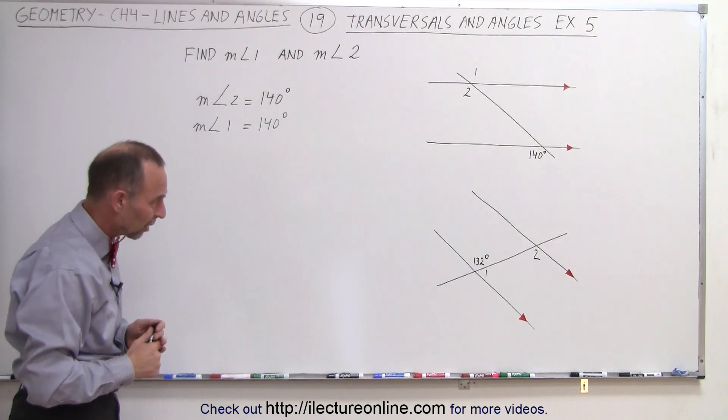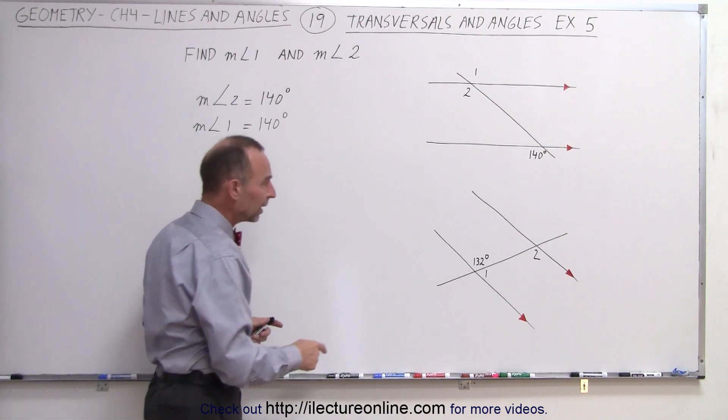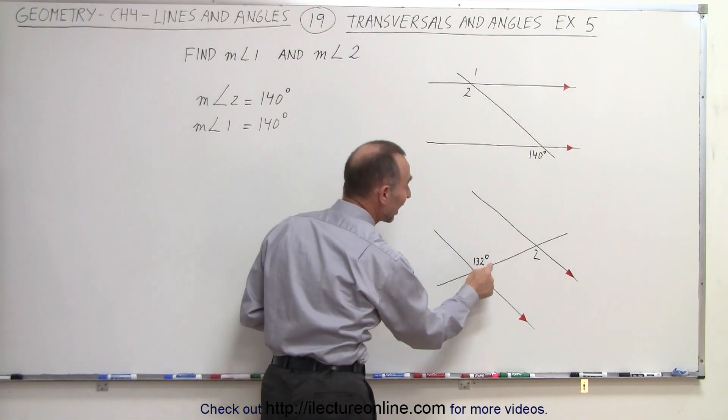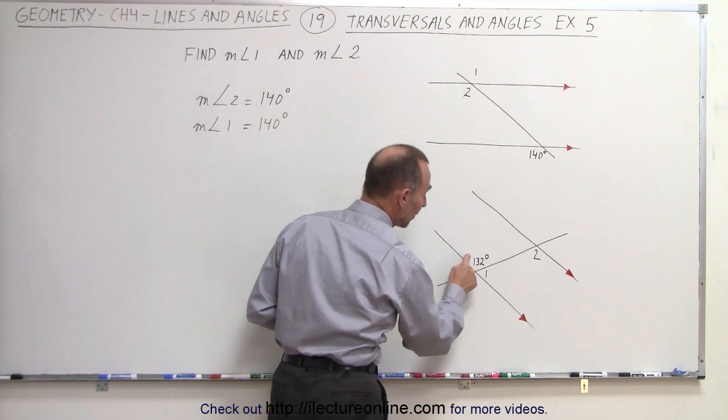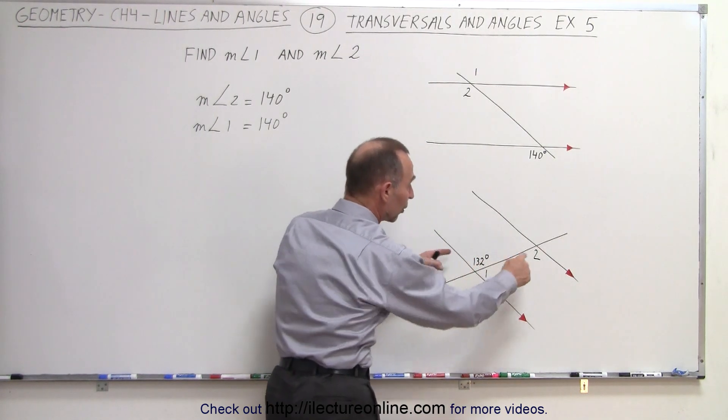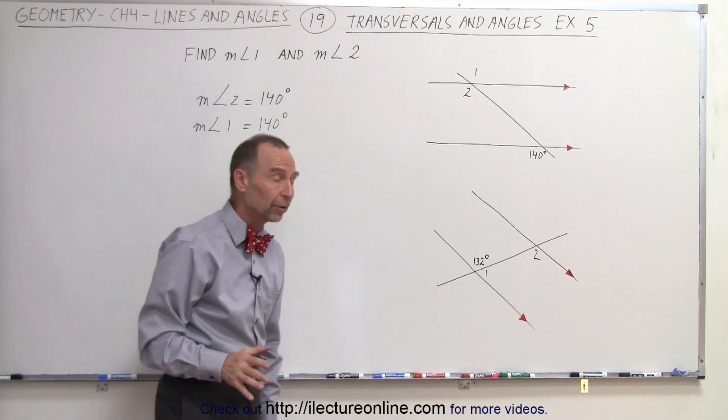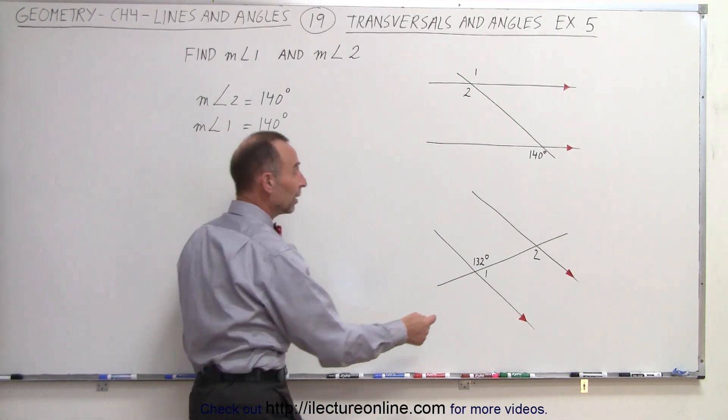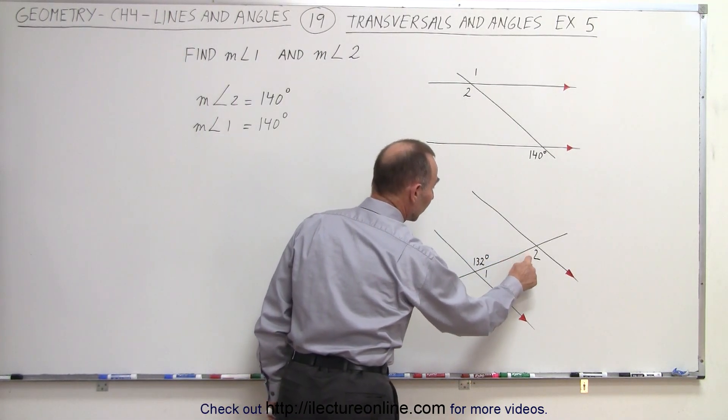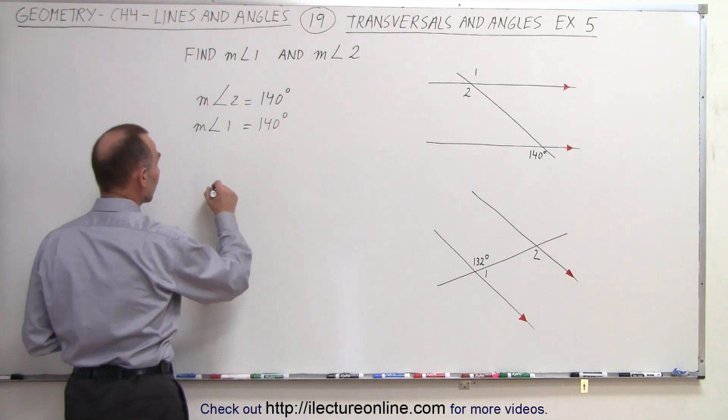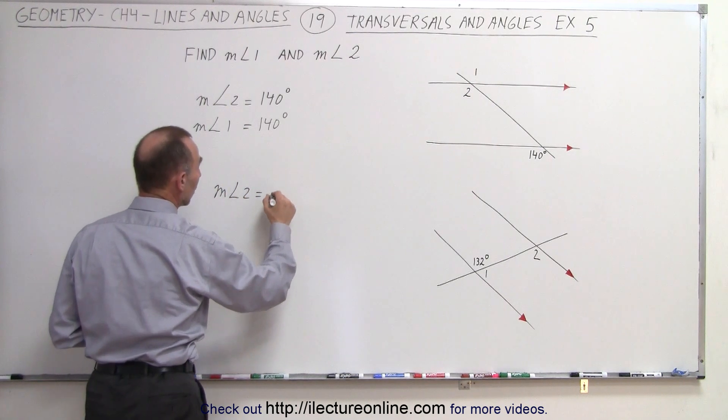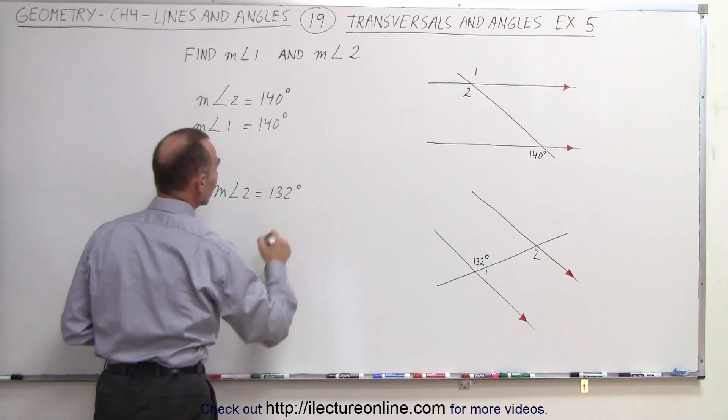Now let's take a look at our second drawing right here. Notice that 132 degrees and angle 1 are supplementary angles, and angle 2 and an angle with a measure of 132 degrees are called alternate interior angles. So we can start with the easy one. We know that by the theorem of alternate interior angles that their measures must be the same. Therefore, the measure for angle 2 must also be 132 degrees.